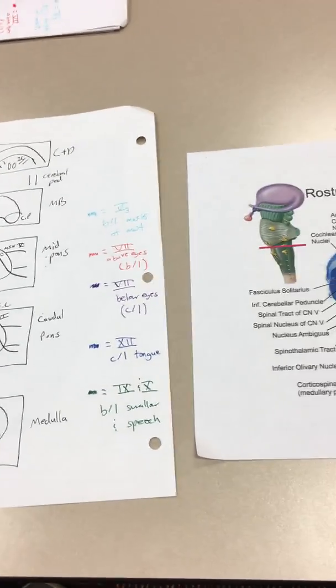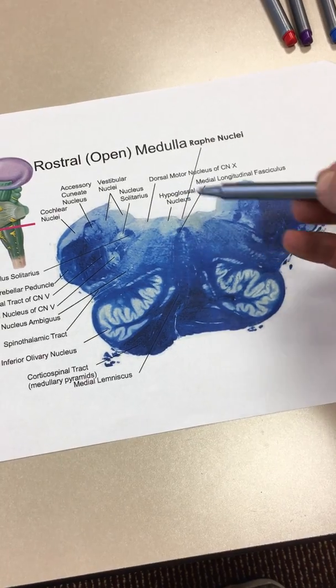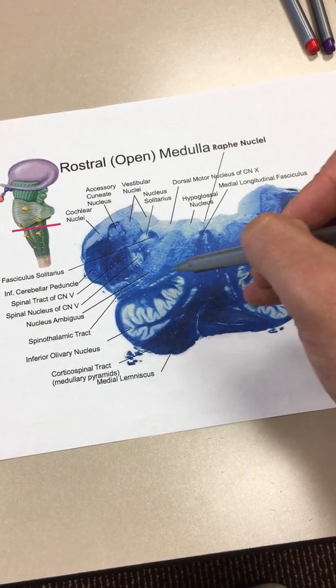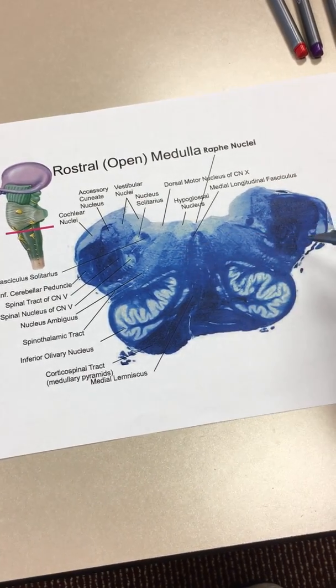Finally, in our rostral medulla, but really in most of the medulla you can see this, your hypoglossal nucleus, and then your large nucleus ambiguus, which is kind of this, as the name suggests, this ambiguous nucleus out here, pretty hard to see, but a lot of important stuff comes from there.